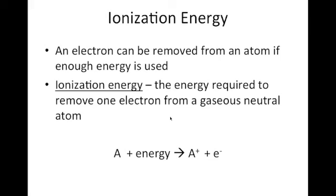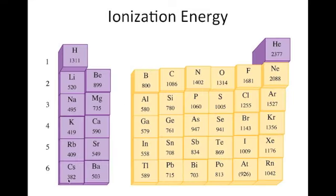Ionization energy is a measurement of how much energy has to be put into an atom in order to kick out an electron. This energy is going to be lowest in the elements that most want to get rid of electrons — so the elements with the fewest valence electrons are the ones that will have low ionization energies. Elements with large numbers of valence electrons — six, seven, eight — are going to have high ionization energies. You can see cesium down here with the lowest ionization energy, because all elements in group one have one valence electron, so it's pretty easy to yank off that one electron.